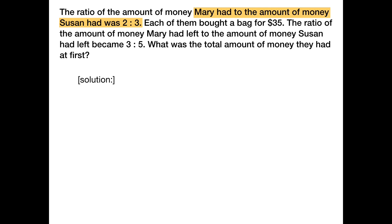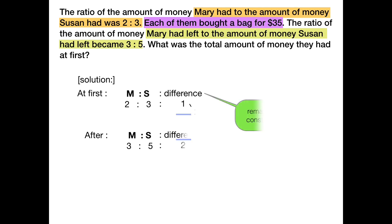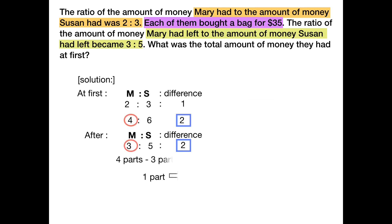The ratio of the amount of money Mary had to what Susan had was 2:3. After each of them bought a bag for $35, the ratio of the amount of money Mary had left to Susan had left became 3:5. The difference remains constant.